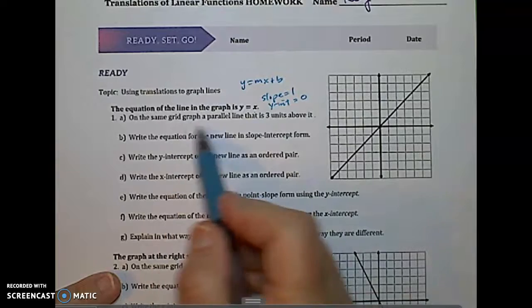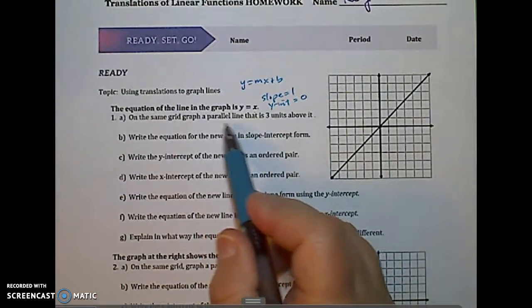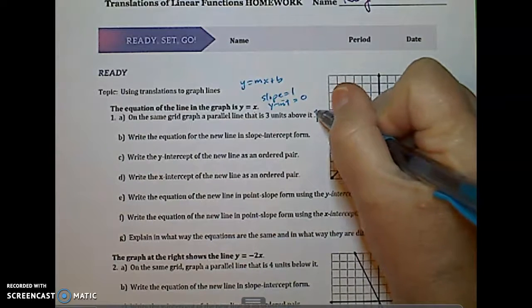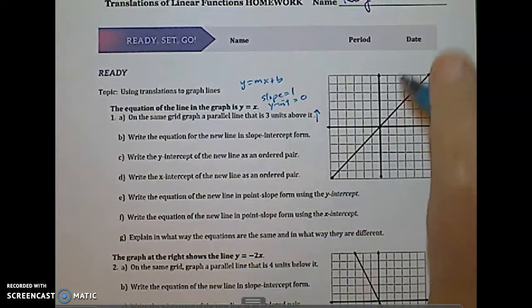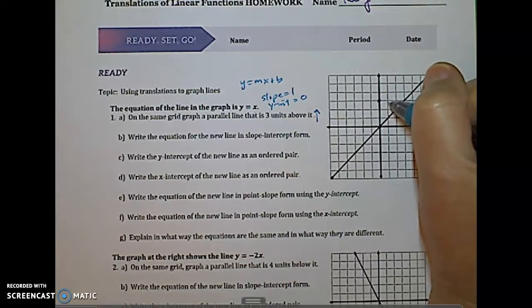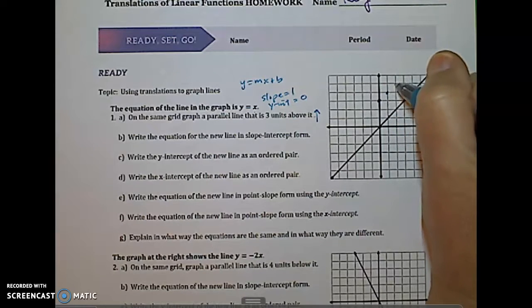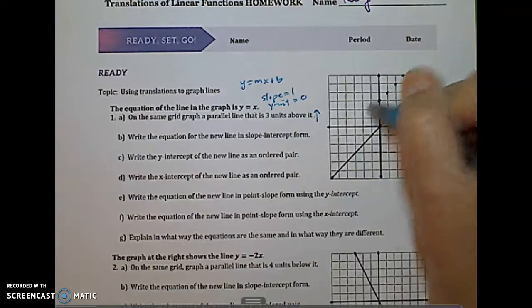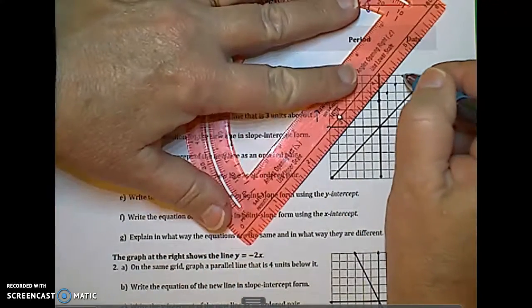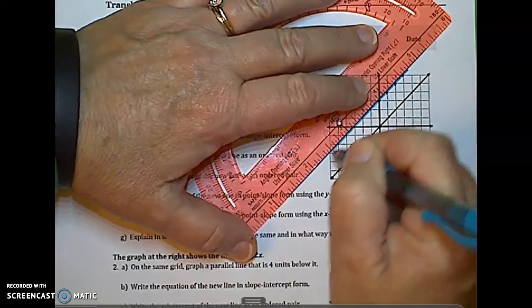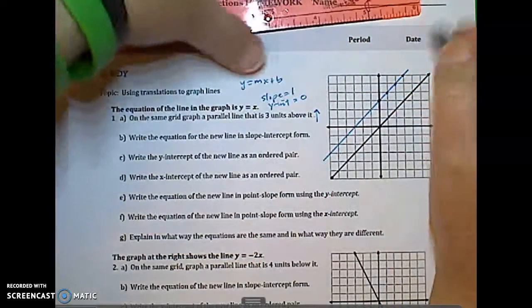So on the same grid, we want to graph a parallel line that's three units above it. So this is three units up. It's actually a vertical translation. One, two, three up. And if you notice the pattern, it falls along. Since it's a parallel line, it is also going to have a slope of one. It's just going to have a different y-intercept. Parallel lines have the same slope, a different y-intercept.